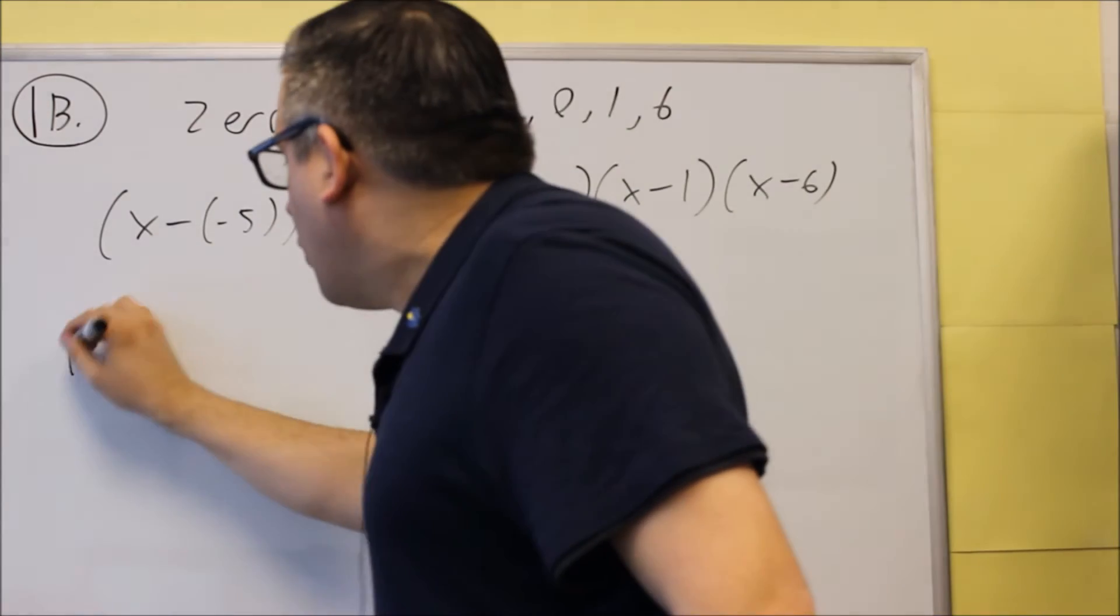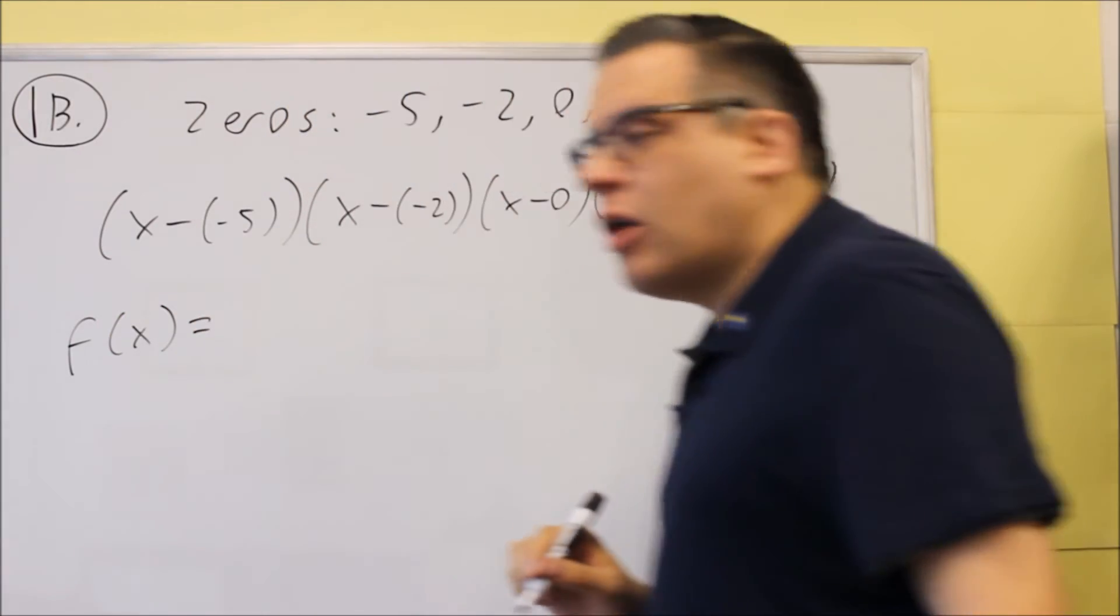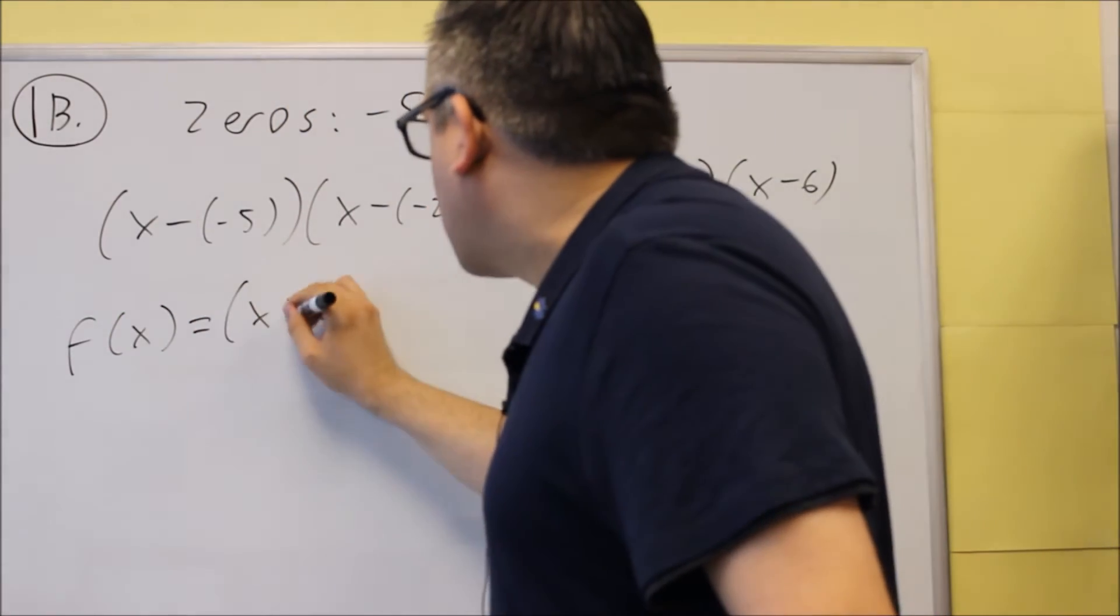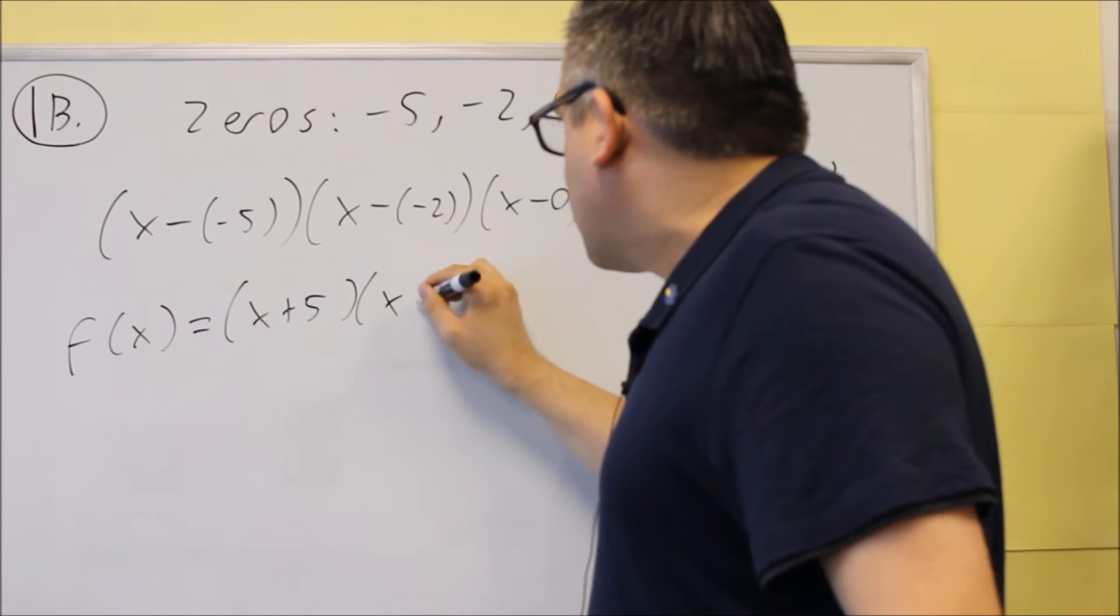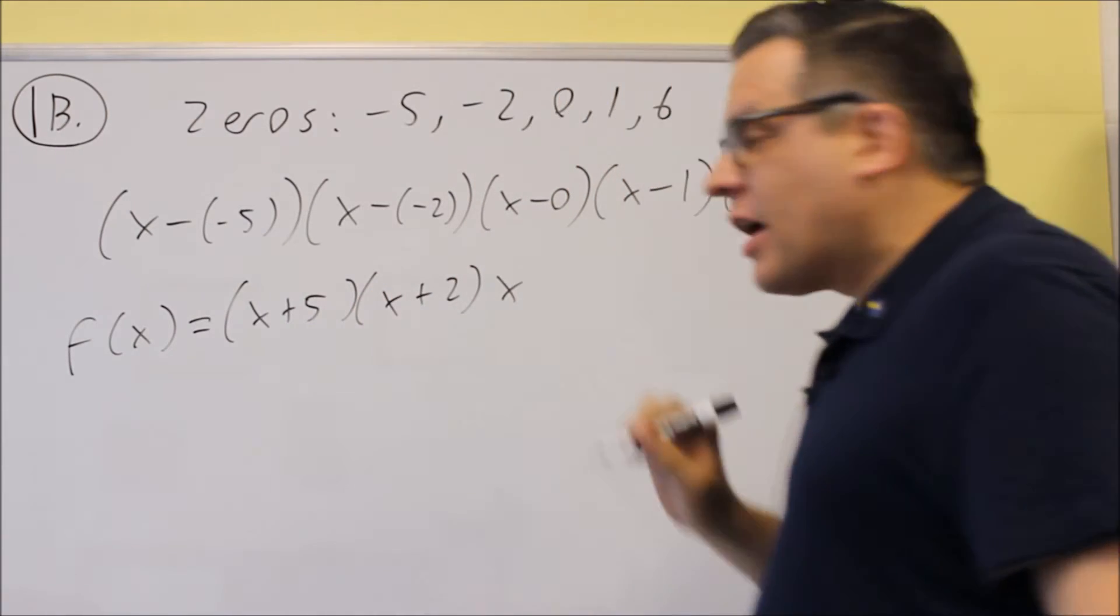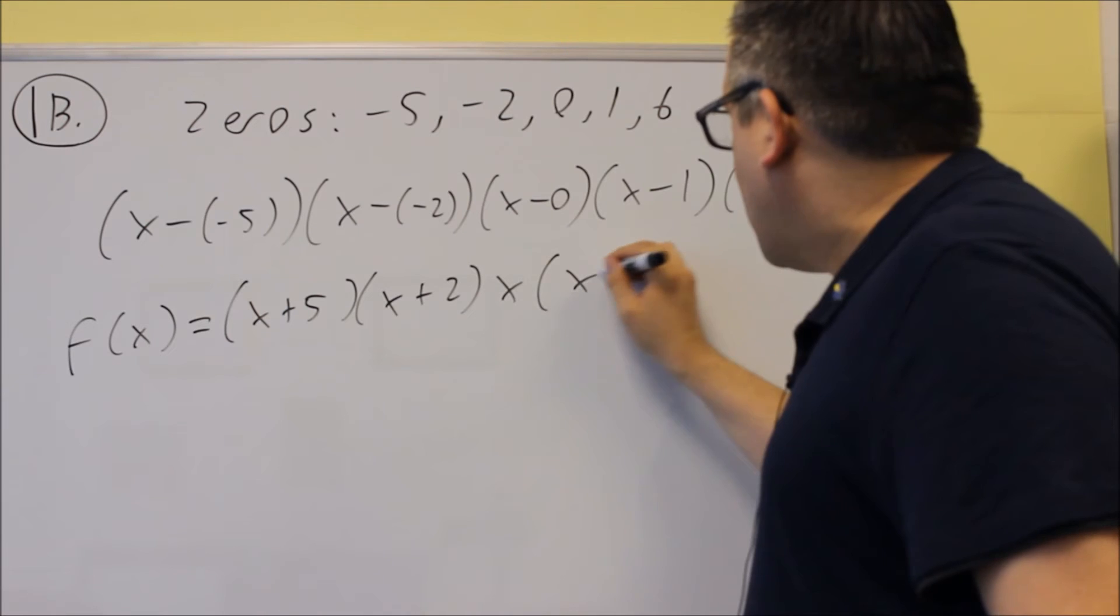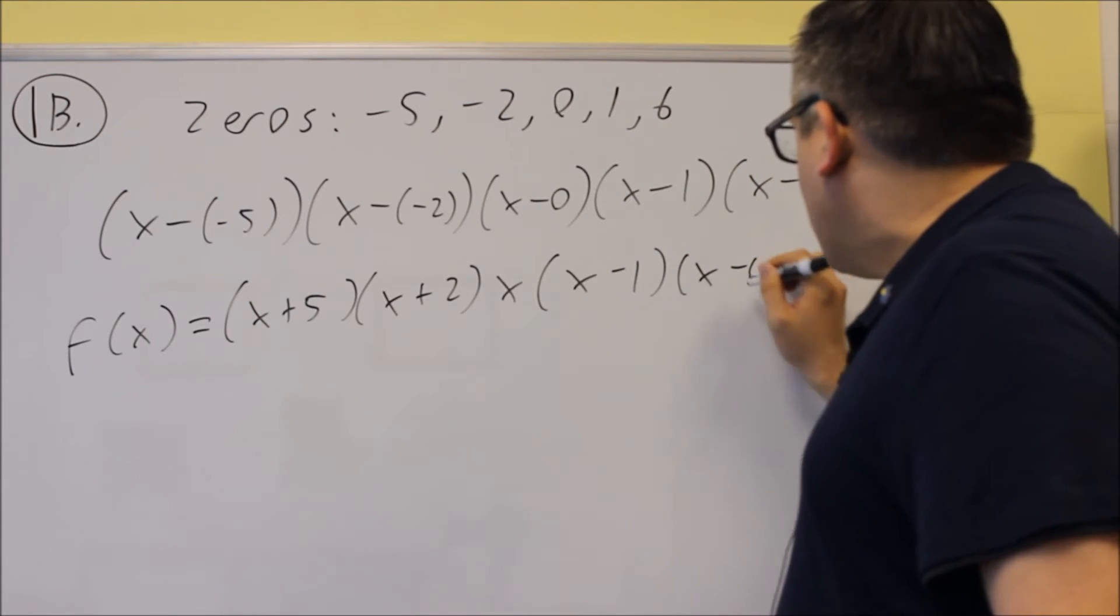When we get our polynomial, we'll put the f(x) here with it, and then we're going to simplify: x plus 5, x plus 2, we just get an x here, x minus 1, x minus 6.